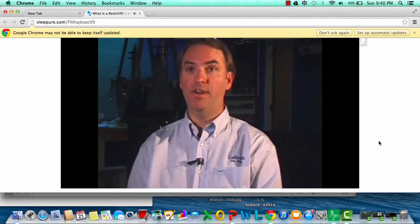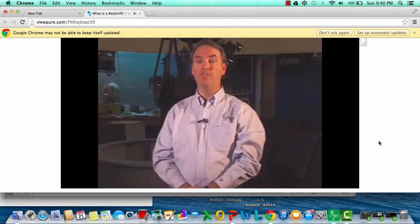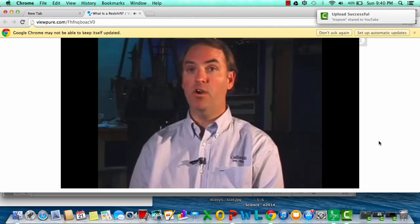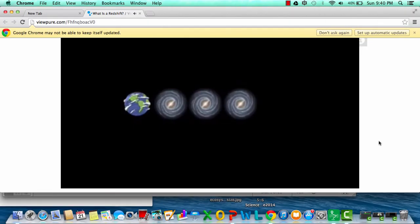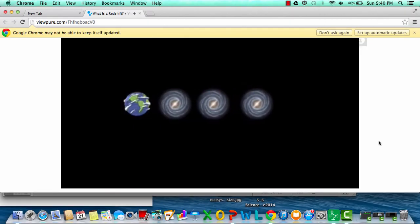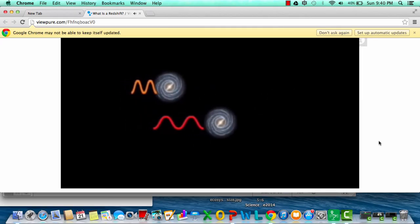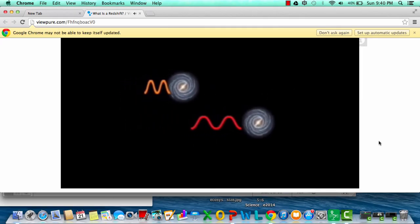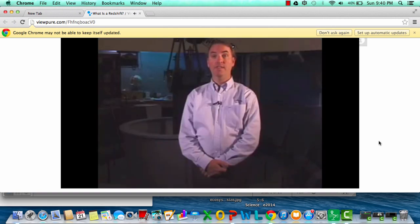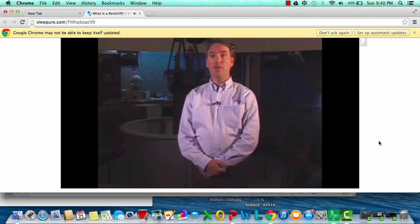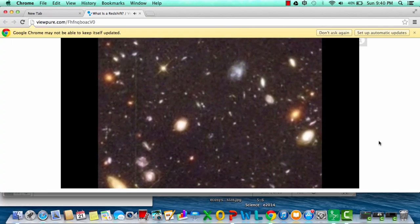How does redshift define distance? The light from most galaxies in the universe is redshifted as seen from Earth because the universe is expanding. The farther away a galaxy is, the faster it's moving. The faster a galaxy moves, the more its light is redshifted. Measuring the amount of redshift is a good measure of the distance of the galaxy. Using this cosmic redshift, astronomers have measured the distance of galaxies as far away as 12 billion light-years.